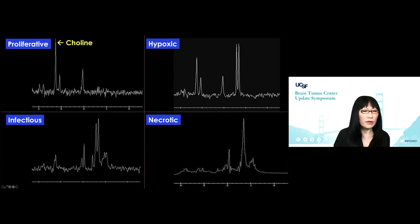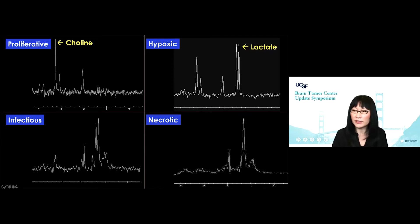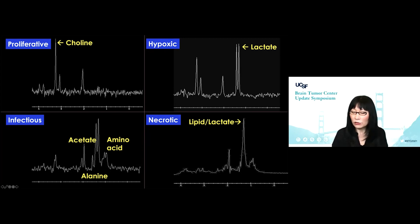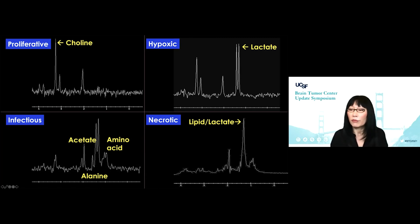So what do I mean by those patterns? Proliferative: we look for high levels of choline. Hypoxic: we look for this very distinct doublet of lactate at 1.3 ppm. Infectious: we look for interesting molecules — amino acids, acetate, alanine — and look at how very low choline is; this is a process harboring infectious material, not a proliferative one. And the last category — necrotic — shows a big peak around 0.9 to 1.3 ppm encompassing both lactate and lipid, with hardly any choline and very low NAA. This is what we see with radiation necrosis.